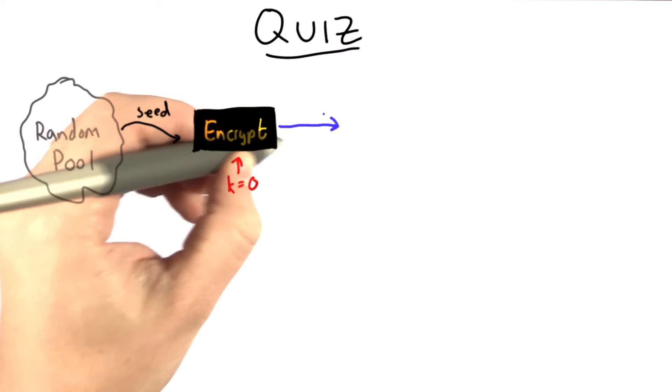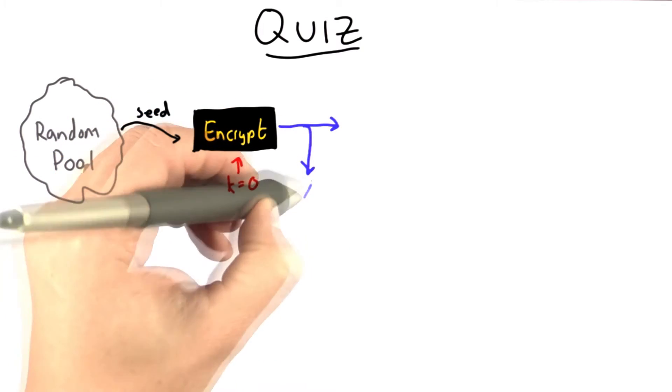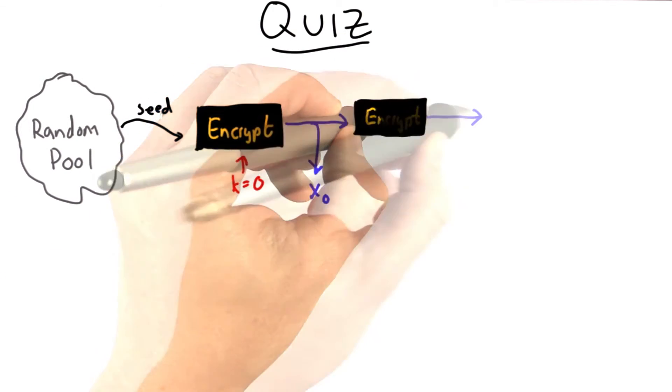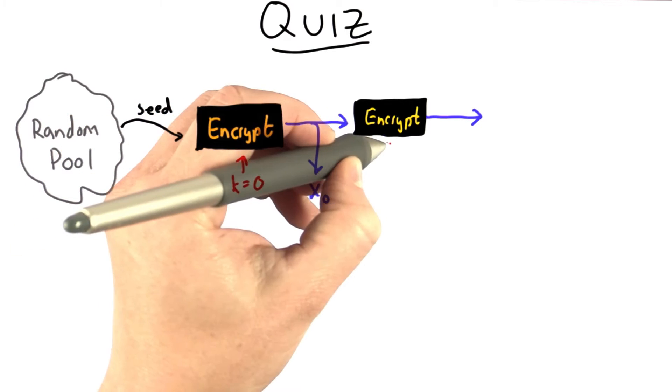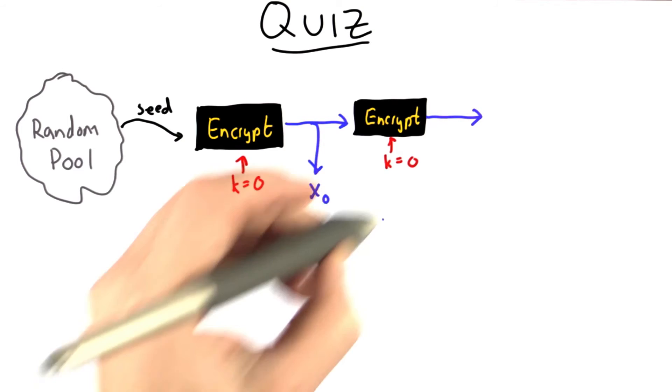We'll get an output from that, and we'll make a copy of the output. That's going to be our first random value, and we'll encrypt again. Using the previous output as the new input, using the key 0 again, and extracting the next random number.